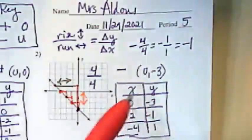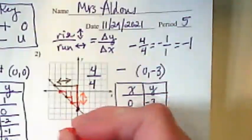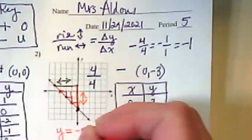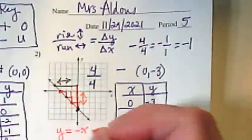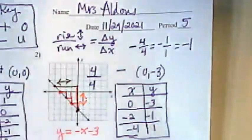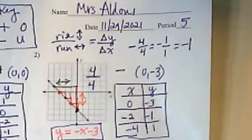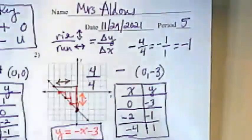So that now means that I can write the equation in the form of y equals mx plus b. y equals negative x minus 3. That's the equation for this line.